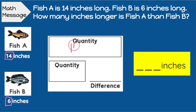So we're going to go 14 here because there's 14 inches. We're going to do IN for inches. And we know that fish B is 6 inches, so we'll go 6 inches. Now, do we know the difference between those two numbers yet? We do not, so we will put a question mark right here.